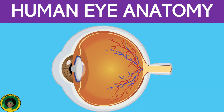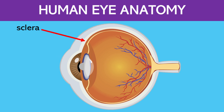Let's learn more about the eye by taking a look at this cross-section model. Here is the sclera. This white outer layer of the eye provides structure and protection for the eyeball. It covers the entire outside of the eye except for the cornea.